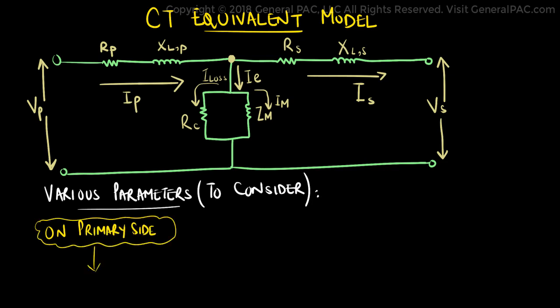First, we have the parameter VP, which can be defined as the rated voltage on the primary side of the current transformer. This is the line side of the CTR connection. Next up we have IP, which is the current flowing through the primary side of the CT.